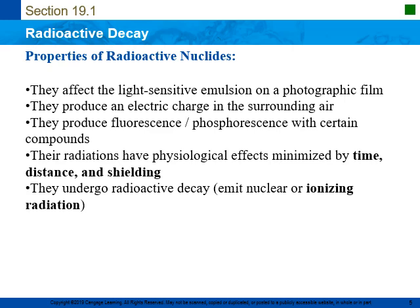We're going to discuss the properties of radioactive nuclides. They affect the light-sensitive emulsion on a photographic film — basically developing film in a dark room. They produce an electric charge in the surrounding air, so they will ionize the air. They produce fluorescence or phosphorescence with certain compounds, meaning a glowing of compounds when exposed to radiation. Their radiations have physiological effects that are minimized by time, distance, and shielding, and they undergo radioactive decay emitting nuclear or ionizing radiation.